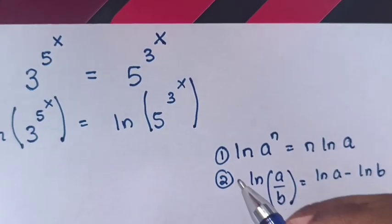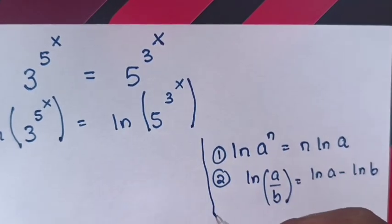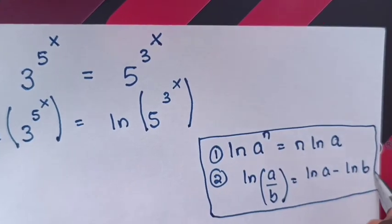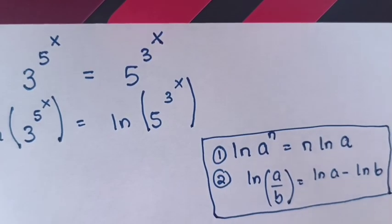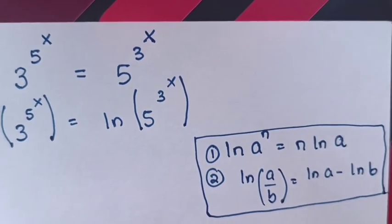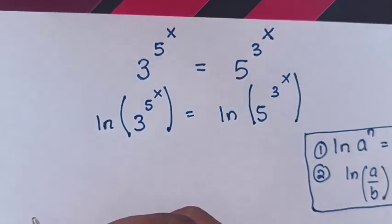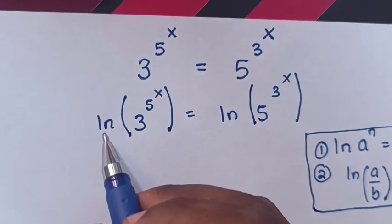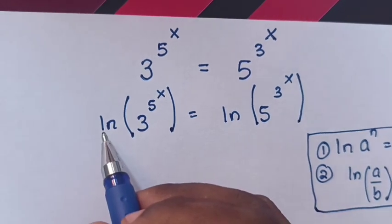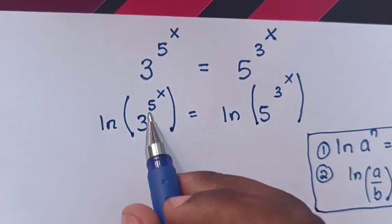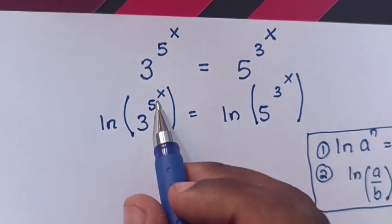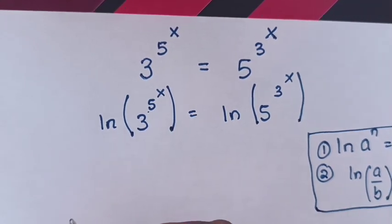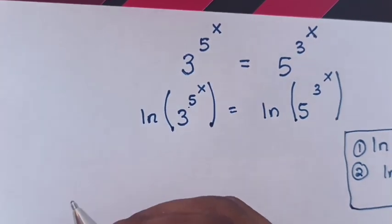So we will apply these rules to our equation. From here, log(3^(5^x)) — the exponent 5^x will move to the front.